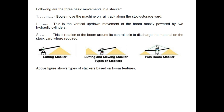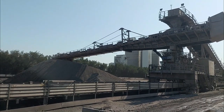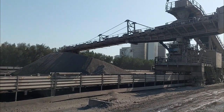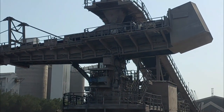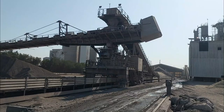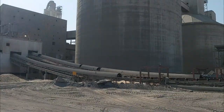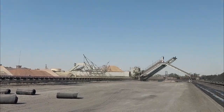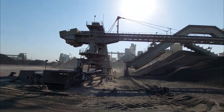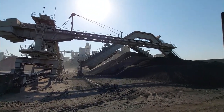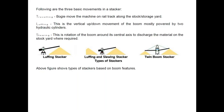The second movement is luffing — this is the vertical up and down movement of the boom, mostly powered by hydraulic cylinders. The third movement is slewing — this is the rotation of the boom around its central axis to discharge material on the stockyard where required.